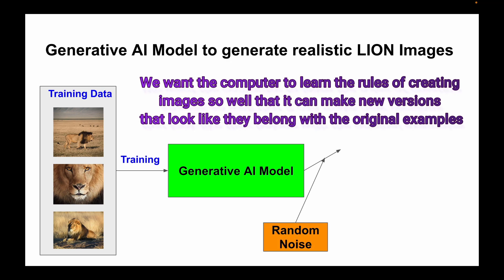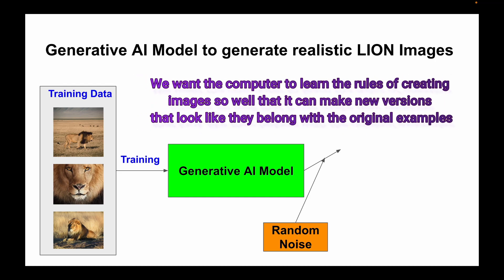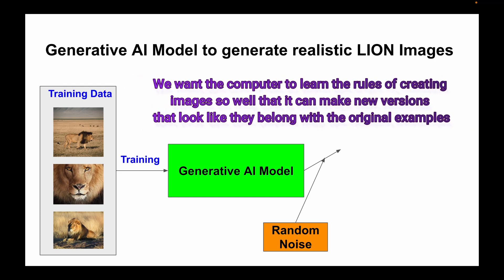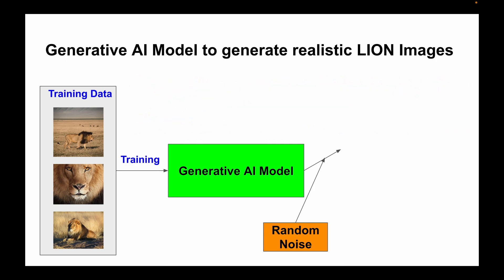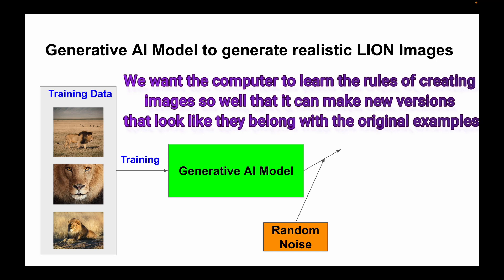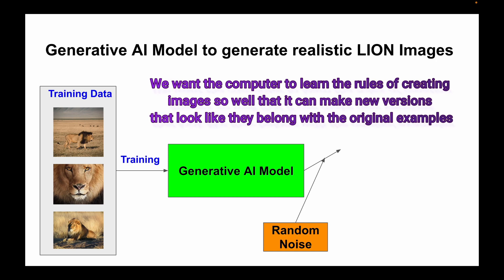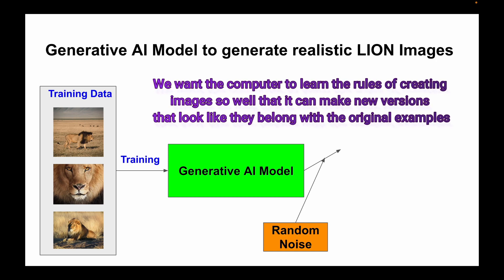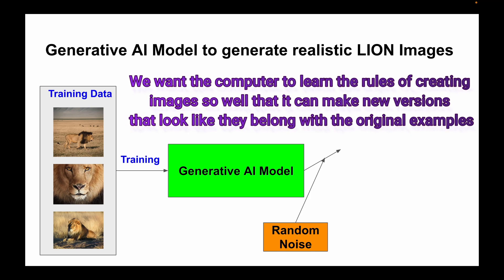So here is the goal. You want the computer to learn the rules of creating this thing so well that it can make new versions that look like they belong to the original samples. This is a very important statement. You want the computer to learn the rules of creating this thing so well that it can make new versions that look like they belong to the original examples or original training data.